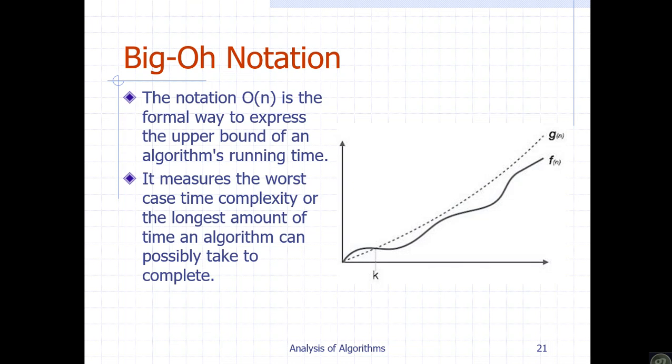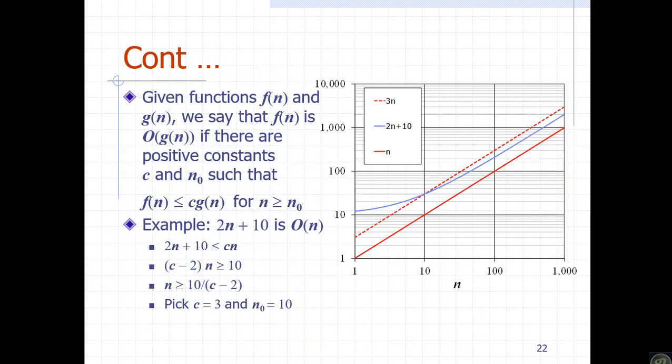Big O represents the worst-case time complexity — the longest amount of time an algorithm can take. It defines the upper bound of an algorithm's running time.